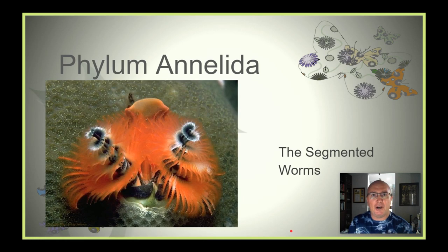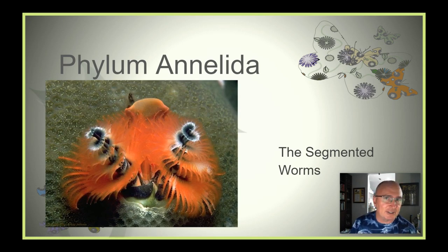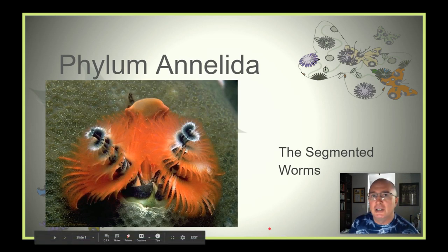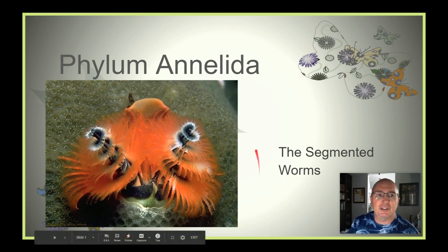There are a few other phyla we're skipping here. There are other groups of worms we're not going to discuss. These include flatworms, Platyhelminthes, roundworms, Nematoda, and several others. But today we're focusing on Annelida, which includes this one right here that we see.